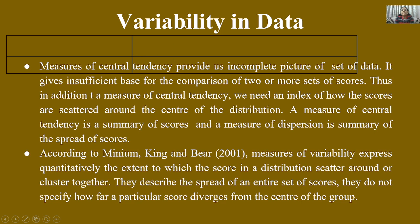Measures of central tendency provide us an incomplete picture of a set of data. They give an insufficient base for the comparison of two or more sets of scores. Thus, in addition to a measure of central tendency, we need an index of how these scores are scattered around the center of the distribution. A measure of dispersion is a summary of the spread of scores.